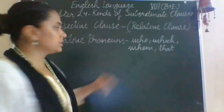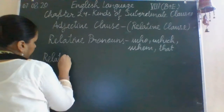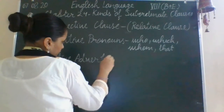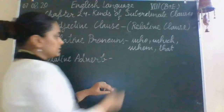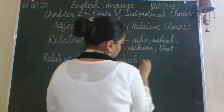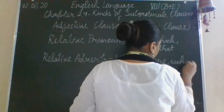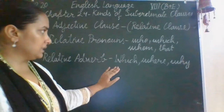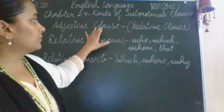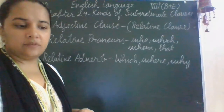The next is the relative adverb. The relative adverbs are: when, where, and why. All these terms are used in the sentence as the relative adverb. So we use the adjective clause with these relative pronouns or the relative adverbs.